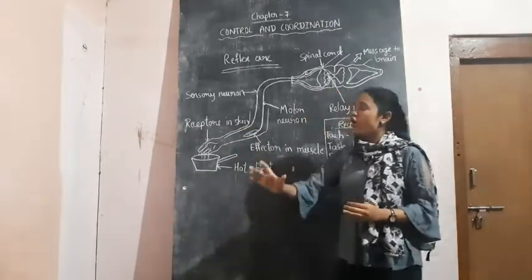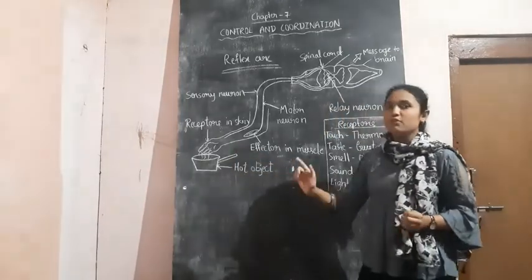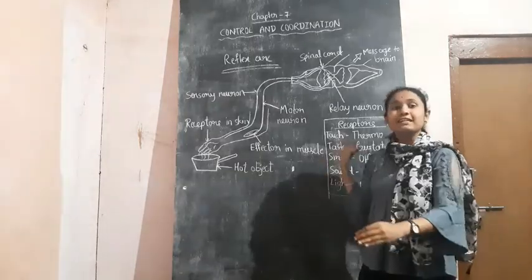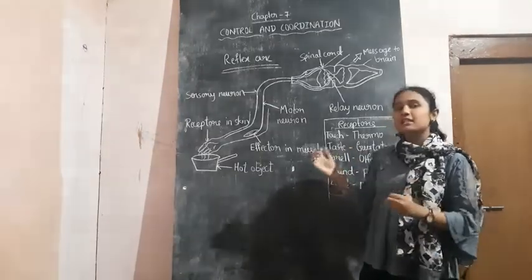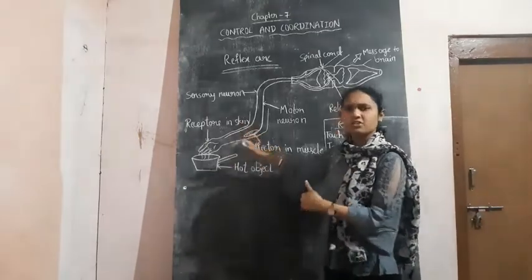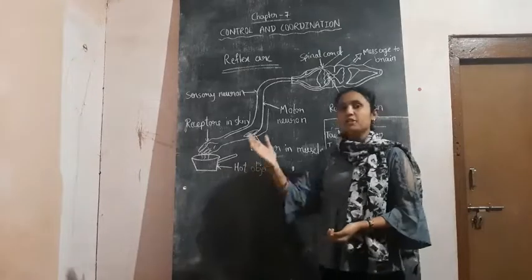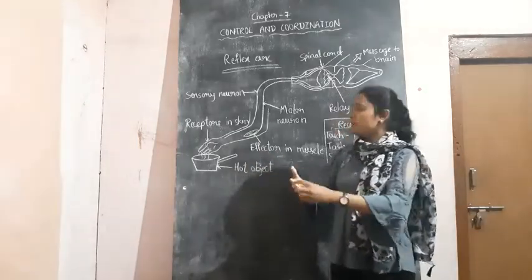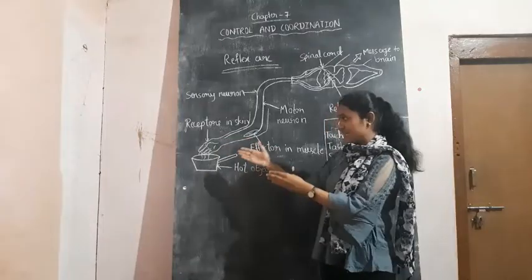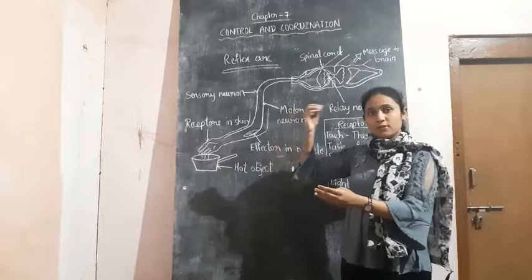If you touch a hot object — see here, he is touching the hot object — at that time you will suddenly take off your hand. The information is transferred as I told you in earlier classes. When you touch the hot object, the neurons present in the skin will take this information and will send it to the brain.